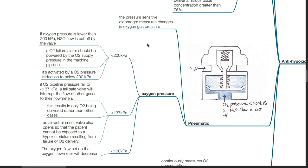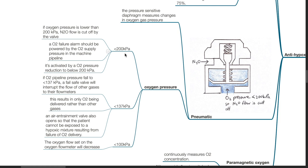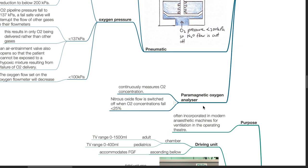Pneumatic systems: the pressure-sensitive diaphragm measures changes in oxygen gas pressure. If oxygen pressure is lower than 200 kPa, nitrous oxide flow is cut off by the valve. An oxygen failure alarm should be powered by the oxygen supply pressure in the machine pipeline and is activated by oxygen pressure reduction to below 200 kPa. If the oxygen pipeline pressure falls to less than 137 kPa, a fail-safe valve will interrupt the flow of other gases to their flow meters, resulting in only oxygen being delivered. An air entrainment valve also opens so that the patient cannot be exposed to a hypoxic mixture. If oxygen pipeline pressure falls to below 100 kPa, the oxygen flow set on the oxygen flow meter will decrease. Para-magnetic oxygen analyzer continuously measures oxygen concentrations, and nitrous oxide flow is switched off when oxygen concentrations fall below 25%.